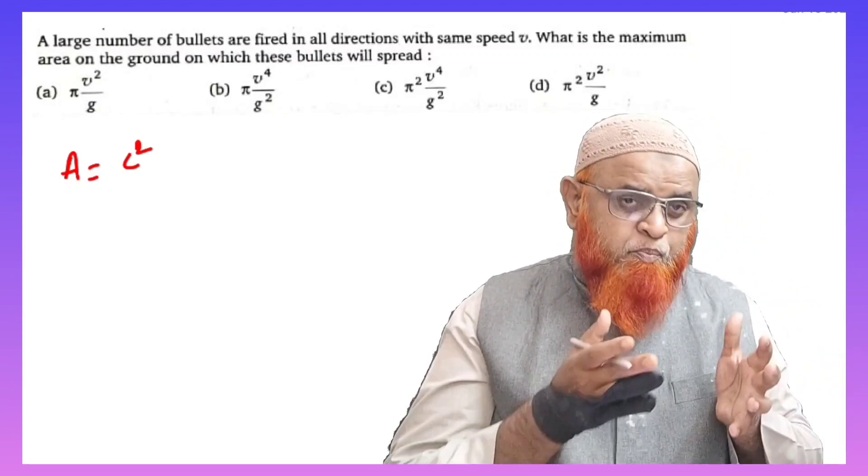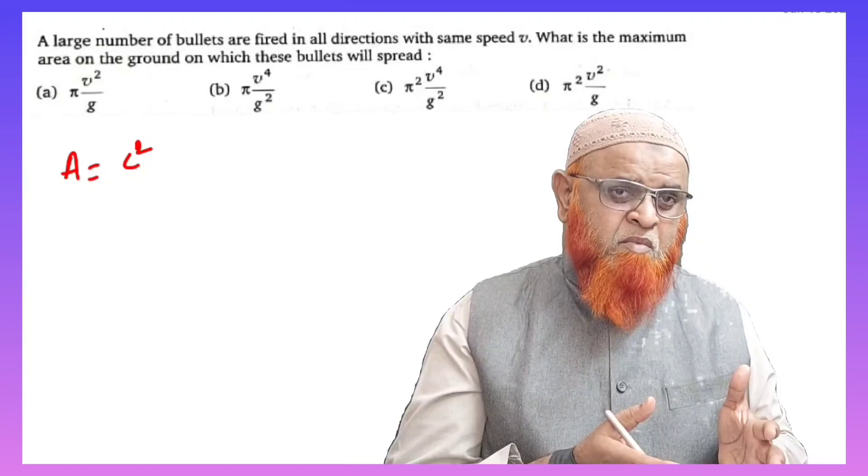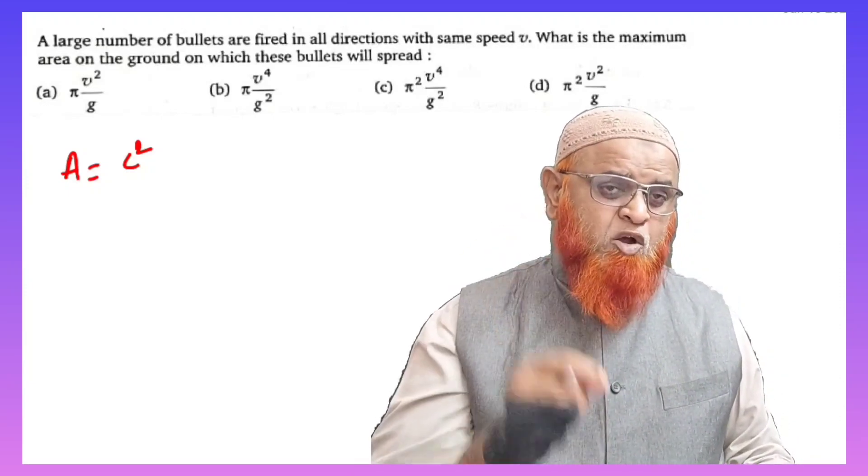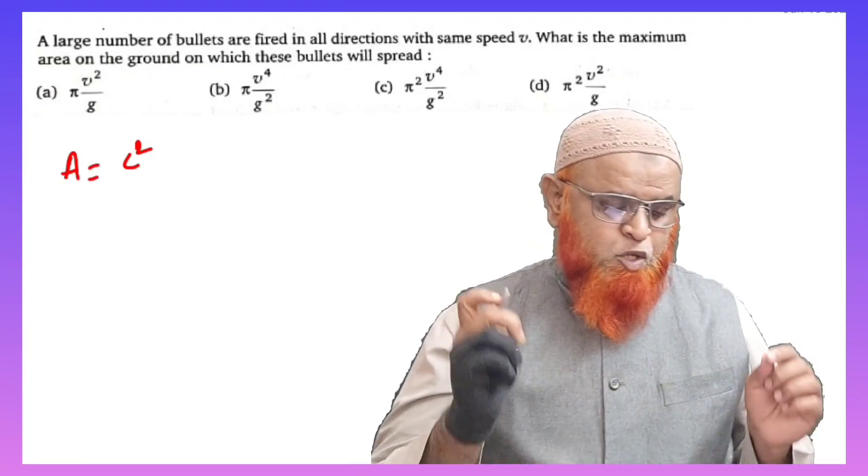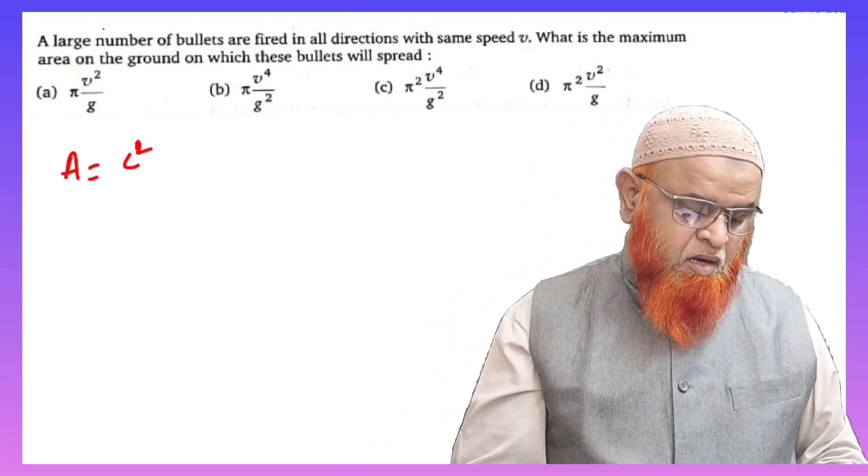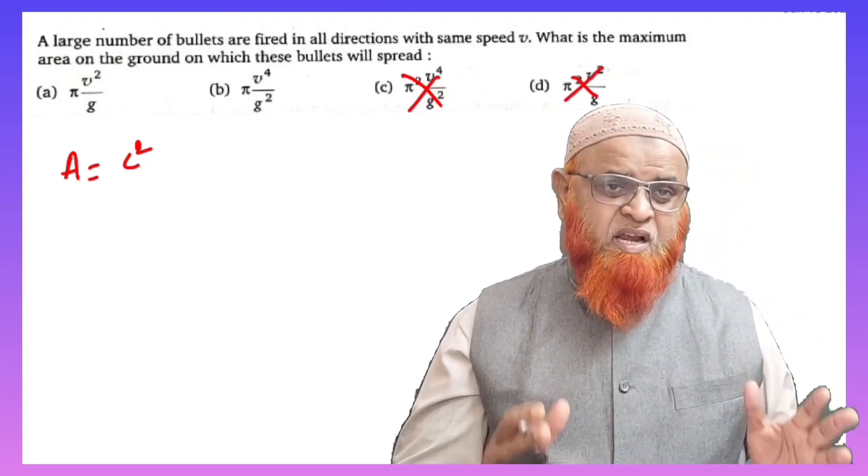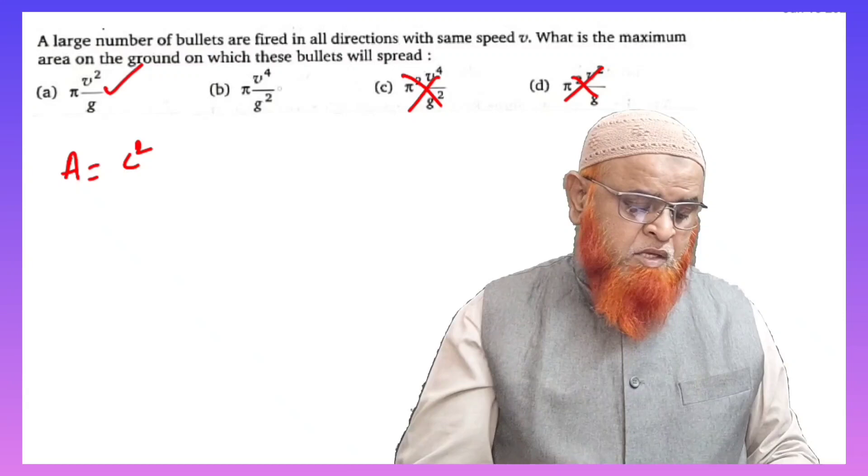If you observe the dimensional formula by seeing the four options, you will immediately get one idea which might be the correct option. Without solving, you can see that π squared or π² can't be the area, because if you consider πr², π will be there.